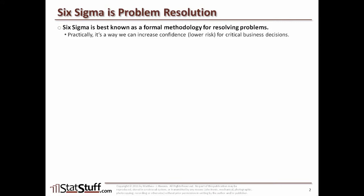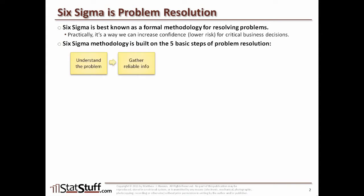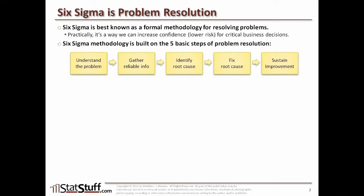In a practical way, Six Sigma means we're trying to increase our confidence, which is the same as lowering our risk for critical business decisions. The five basic steps for resolving a problem are: first, understand the problem; next, gather as much reliable information as possible; then assess that information to identify the root cause; once we know the root cause, identify the improvement that will fix it; and finally, sustain that improvement.